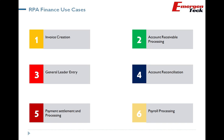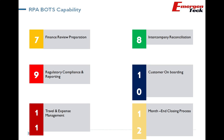Number five is payment settlement and processing — for inter-department and vendor payment settlements, multiple systems are involved including bank portals and SAP systems, where we can deploy an RPA bot. Number six is payroll processing — a painful activity at month-end with a lot of manual work involved, making it a good RPA candidate. Number seven is finance review preparation — pulling data from multiple systems and consolidating it to present to management, where data collection and consolidation can be handled by an RPA bot.